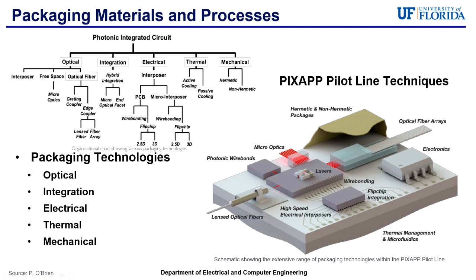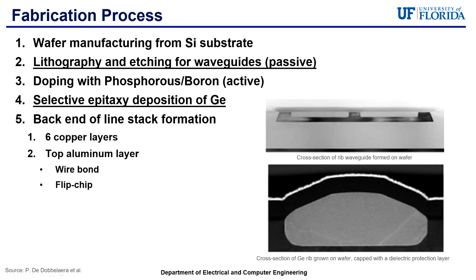As shown in the right figure, the European Commission established a new pipeline to possibly address the challenges of photonic integrated circuit packaging. Moving on to the fabrication process of silicon photonics: first, you start with wafer manufacturing from the silicon substrate. The second step is lithography and etching for waveguides. The third step is doping with phosphorus and boron. The step after that is selective epitaxy deposition of germanium, where a cross-section of germanium is grown on the wafer and is then capped with a dielectric protective layer. The final step is a back end of line stack formation, where there are six copper layers and the top layer is aluminum, which allows for wire bonding or flip chip technology to take place.